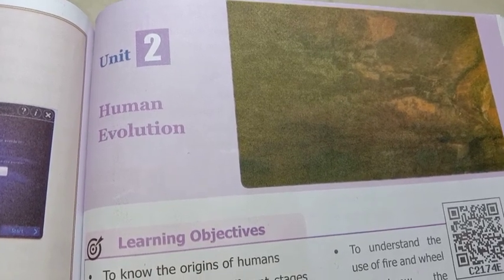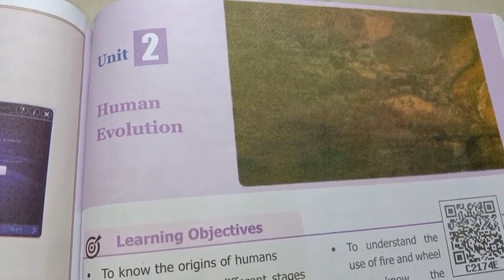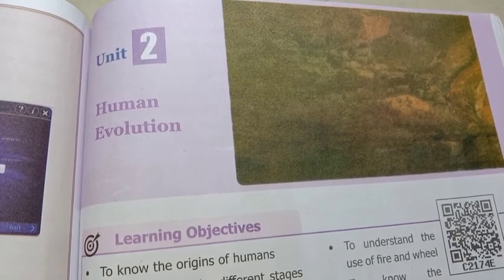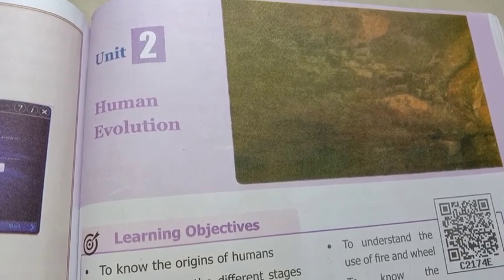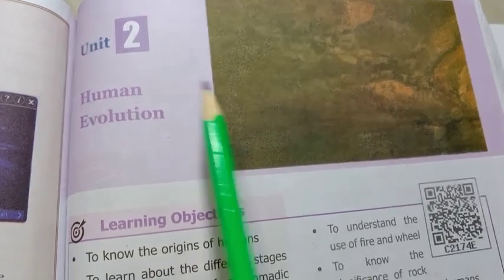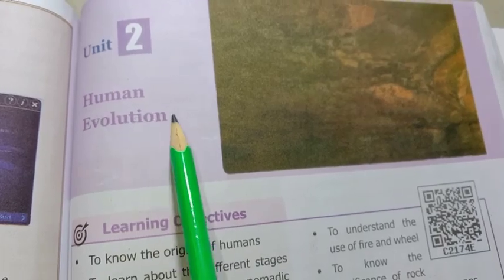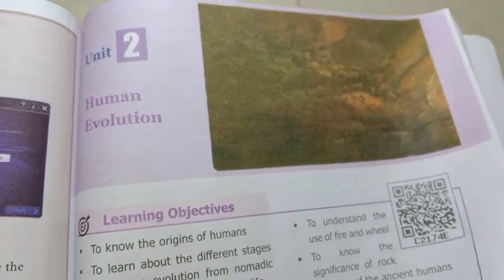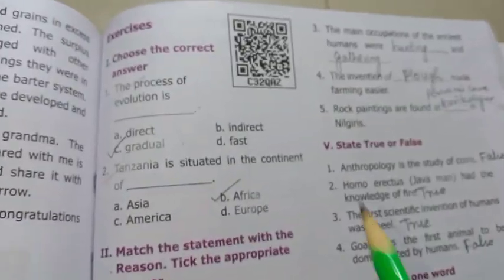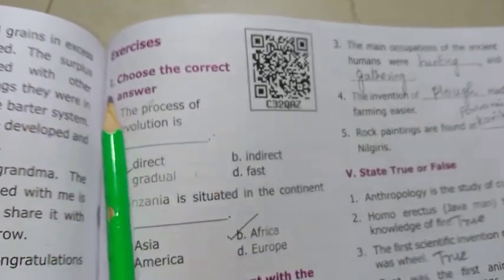Hi all, welcome to our channel Student Station. If you are subscribed to the channel, please subscribe. In this video, 6th standard social science, term 1, unit 2, human evolution — bookback exercise. Turn to page 129.